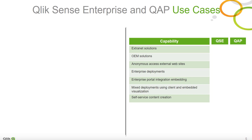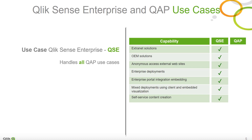QAP is intended for Extranet and OEM offerings, where large numbers of users will access a QAP-enabled website for short to medium periods of time — in other words, high concurrency with low duration of time. Think guided dashboards with mild interactivity.